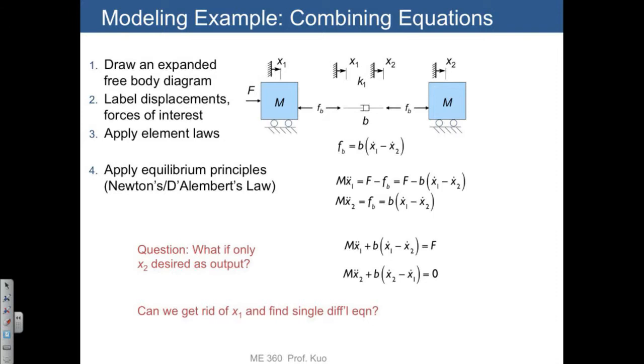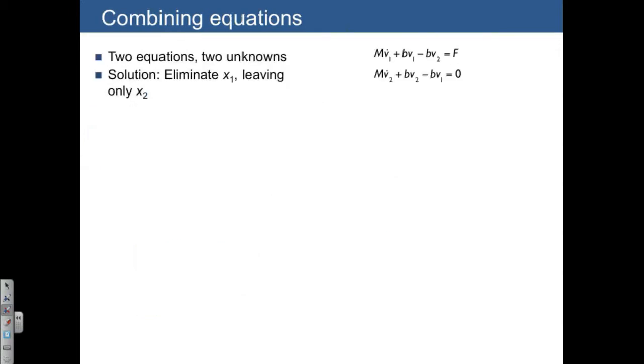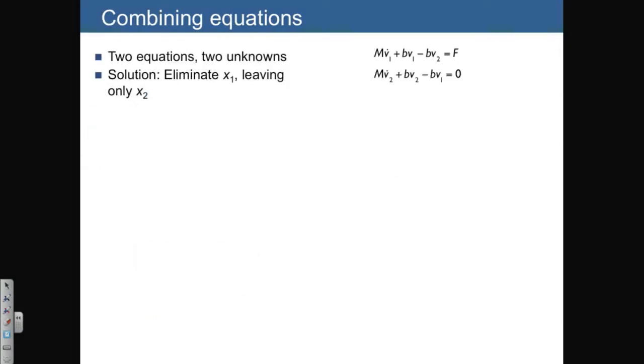So what we desire to do is to take all the x1s and get rid of them. Here's how we can do that. Let's rewrite our equations, our two equations, where just to keep things a little simpler I'm defining v1 equal to x1 dot so that I have fewer dots to worry about. So we have two equations and two unknowns and we want to get rid of v1.